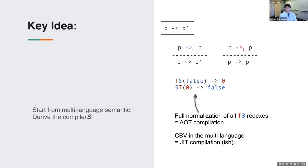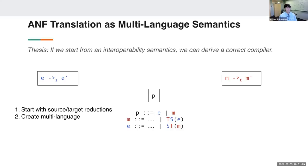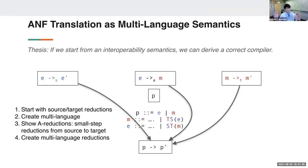The translation I'm going to work with is the ANF (A-normal form) translation. Starting from the interoperability semantics, we can derive a correct compiler. We'll define the source/target reductions, create our multi-language, show the A-reductions that perform the ANF translation, inject them into a big multi-language reduction — non-deterministically reducing in the source, the target, or compiling — then derive some compilers and prove properties.